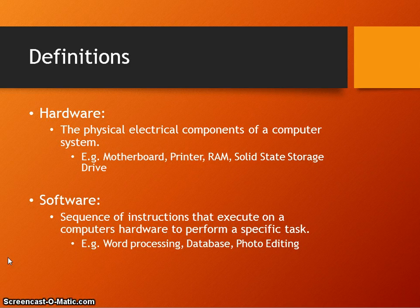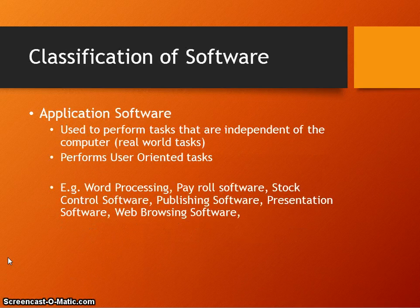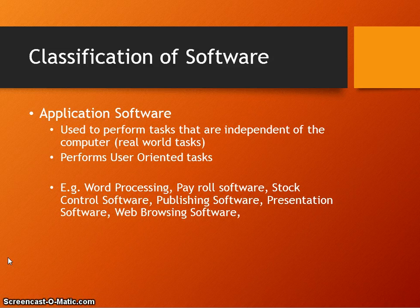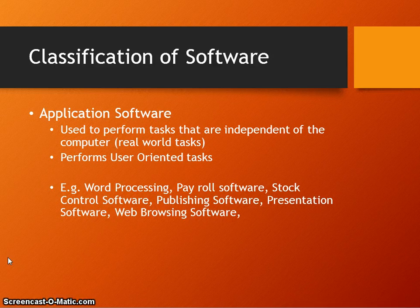Throughout the rest of the presentation we're going to look at the classification of software. Software can be classified into two distinct areas. One of those is known as application software. Application software is used to perform tasks that are independent of the computer — for example, real-world tasks. These are often known as user-oriented tasks.